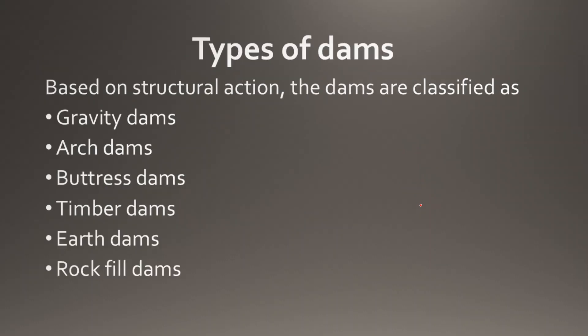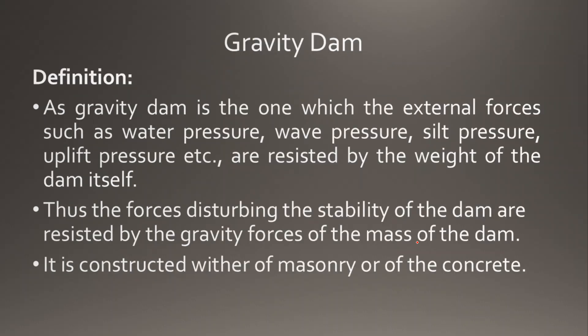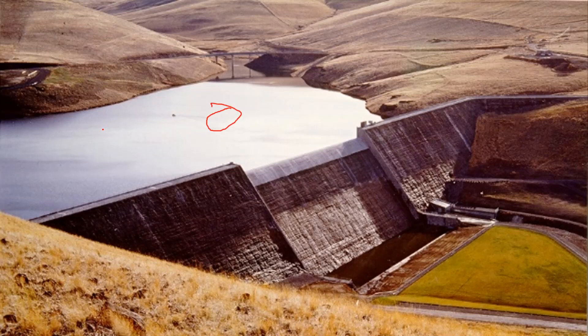The first module covers gravity dams. Based on structural action, dams are classified into gravity dam, arched dam, buttress dam, earthfill dam, and rockfill dam. Since concrete is widely available nowadays, gravity dams are most commonly constructed. Here is the gravity dam structure: water is on one side, and the wall is inclined. This inclined part acts like a gravity retaining wall.